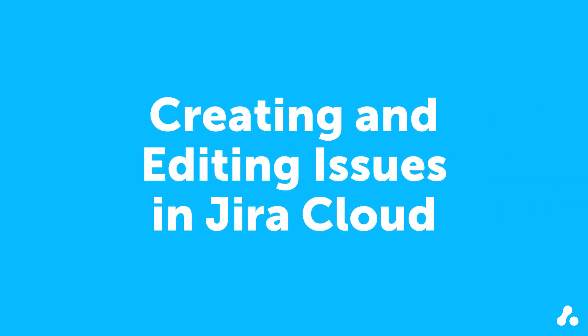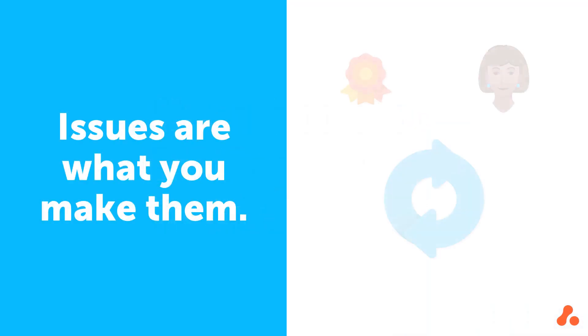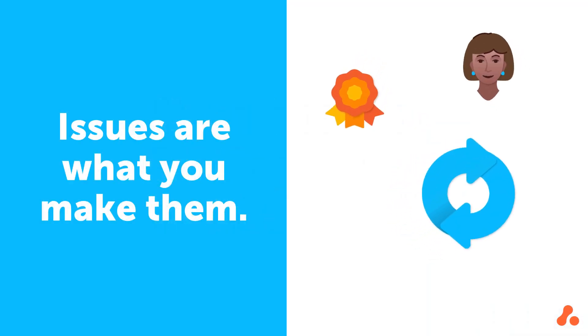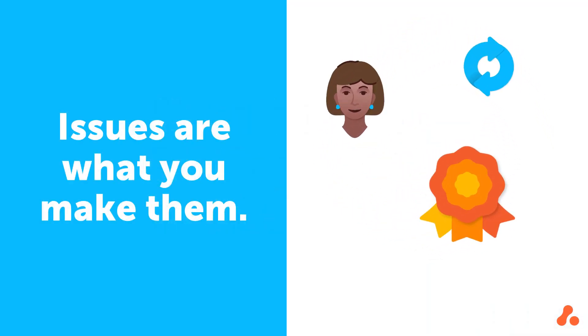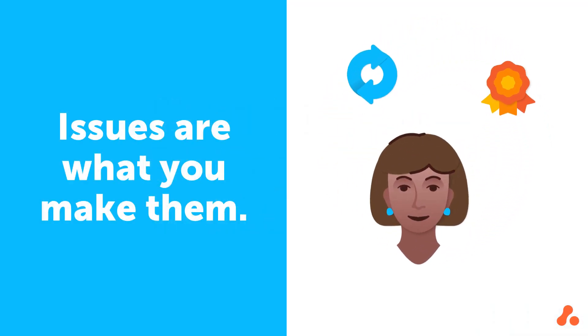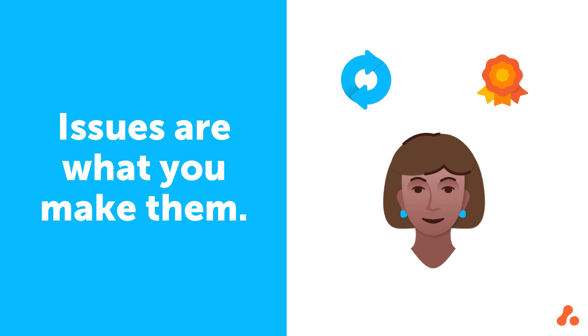Issues are bits of work in Jira, representing all sorts of tasks that are handled at your organization. They might be related to a process, a product, or even a person. It depends on the context of the project and what you need to get done.